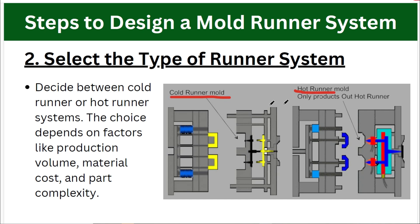Next, select the type of runner system. In a cold runner system, the gate and runner are ejected with the part, trimmed as scrap, and can be recycled. In a hot runner system, the runner is kept in a molten state and continuously fills the cavity each cycle. For complex parts and high-volume production we use the hot runner system, while cold runner systems are generally used for simple parts and single molds. Hot runner systems are used for multi-cavity molds and complex parts.